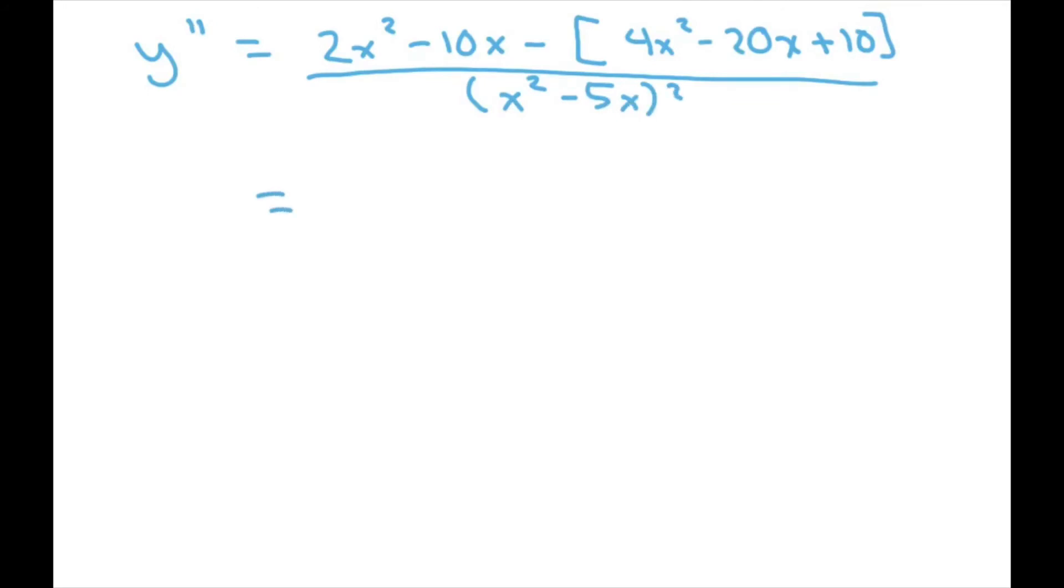And if you want to, I don't know how far you want to go with this, but you can go ahead and FOIL that out. This would be your a minus b squared formula again.